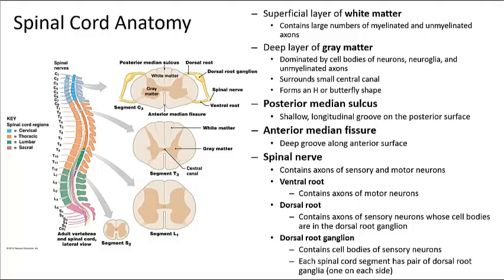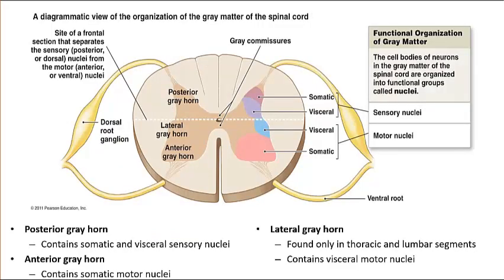The gray matter is organized into structural and functional areas. The projections toward the outer surfaces of the spinal cord are called horns. The posterior gray horn contains somatic and visceral sensory nuclei. The lateral gray horn, present only in thoracic and lumbar segments, contains visceral motor nuclei. The anterior gray horn contains somatic motor nuclei. Sensory nuclei receive and relay sensory information from receptors to the CNS, while motor nuclei issue motor commands to peripheral effectors.